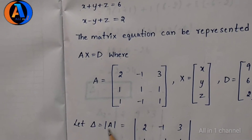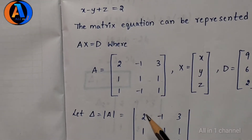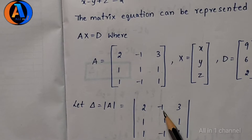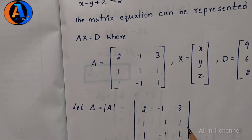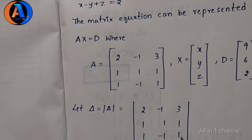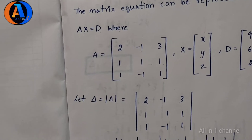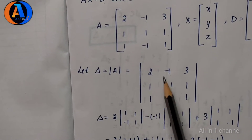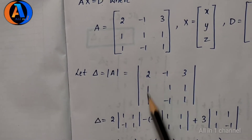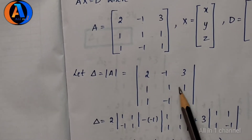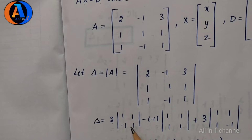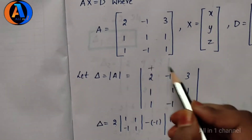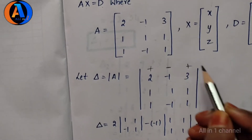Let delta equal to determinant of A. Computing det A with the matrix 2, minus 1, 3; 1, 1, 1; 1, minus 1, 1. Delta equals: first take 2, eliminate first row and first column to get the 2x2 minor: 1, 1, minus 1, 1. Then plus, here minus, here plus.